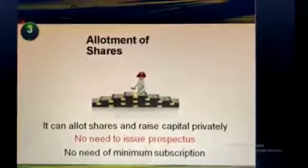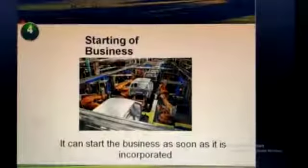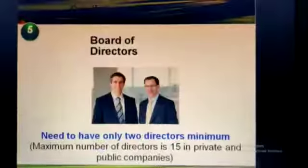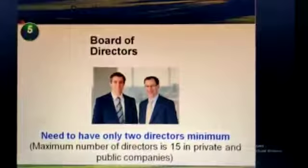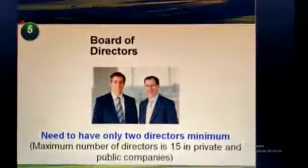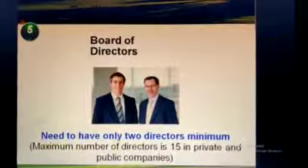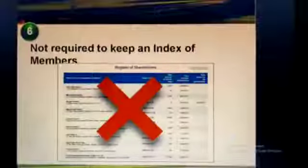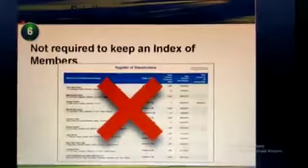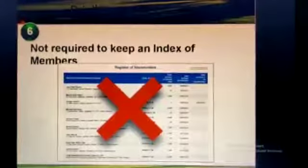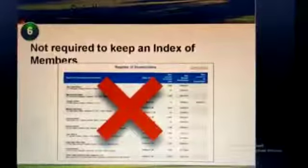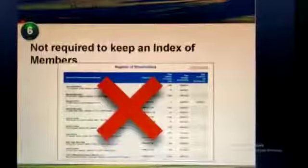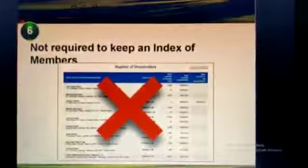There is also no need for minimum subscription. Fourth, regarding starting a business, it can start the business as soon as it is incorporated. Fifth, regarding the board of directors, it can work with just 2 directors as compared to 3 directors under a public company, and the maximum number of directors is 15 in both private and public companies. Additionally, a private company is not required to keep an index of members, while the same is necessary in the case of a public company. These are the privileges of a private company.